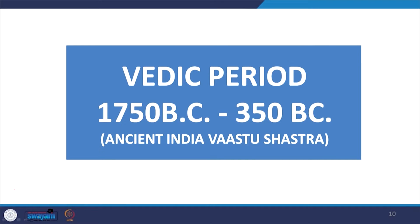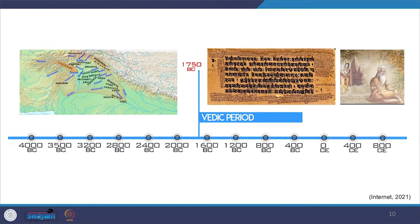The Vedic period is said to stretch from 1750 to 350 BC. The geographical boundary of the earlier Vedic period started from the northern part of the Indian continent and later on it stretched to the entire South Asian continent. As we see in the left hand side image, the Vedic period was the time when languages and scripts evolved.